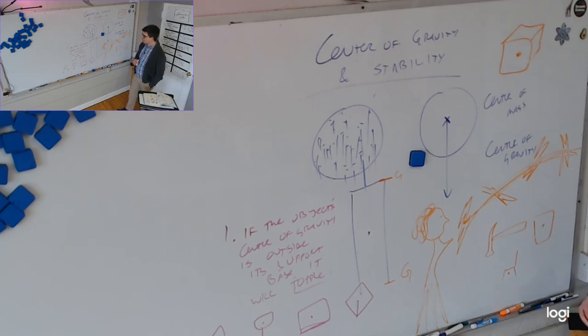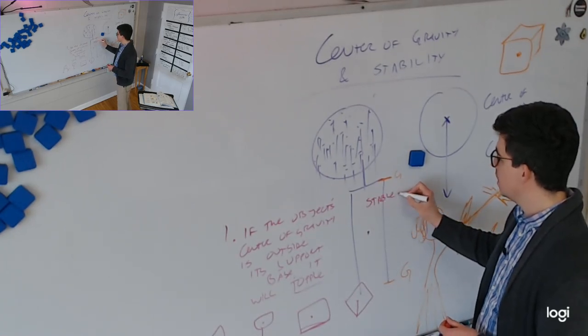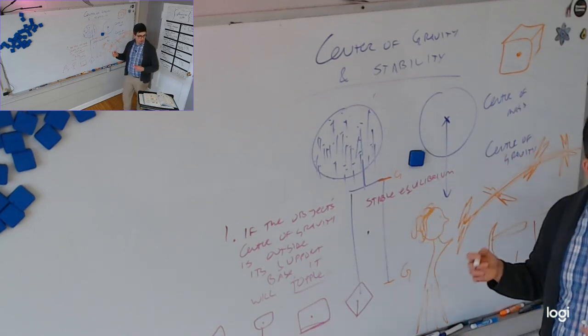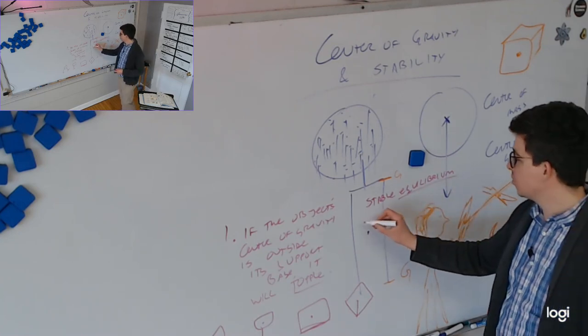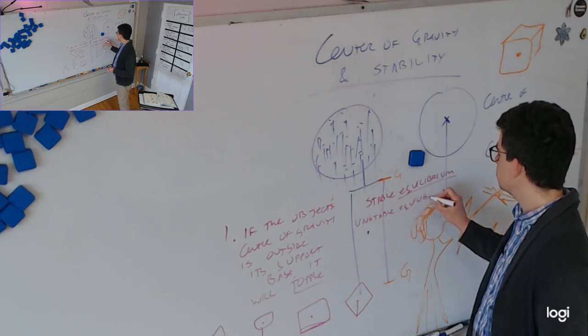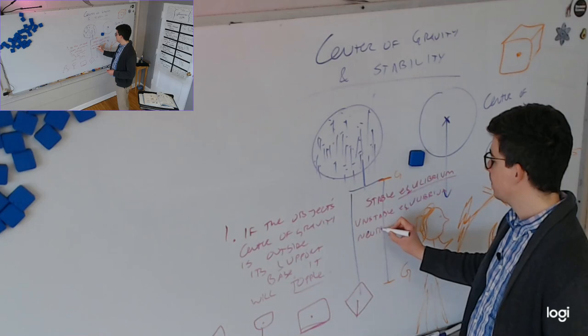There are three kinds of stability. No, I should say there are three values of stability. Things can be in stable equilibrium. When I say equilibrium, if something is sitting still, it's in equilibrium. If all the forces, if the net force acting on it is zero, it's in equilibrium. And it can be in stable equilibrium. It can be in unstable equilibrium.